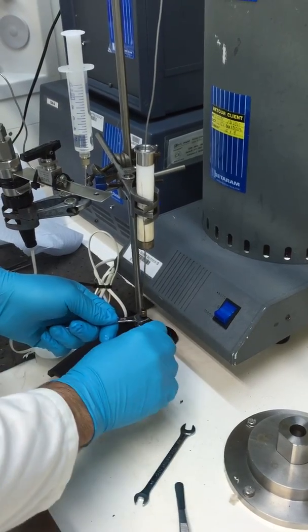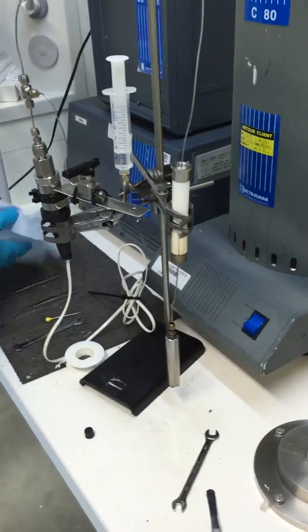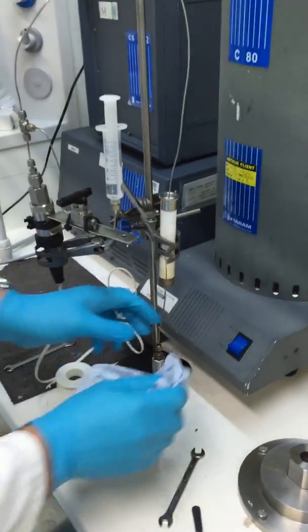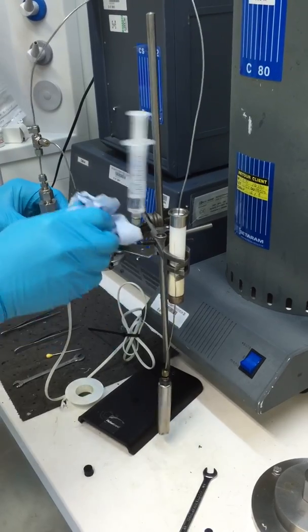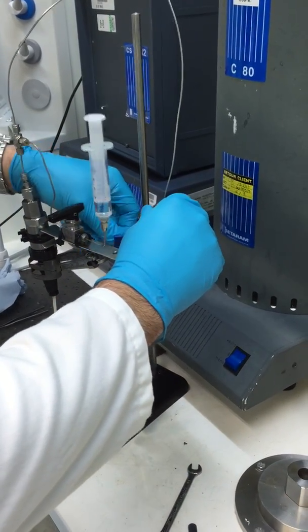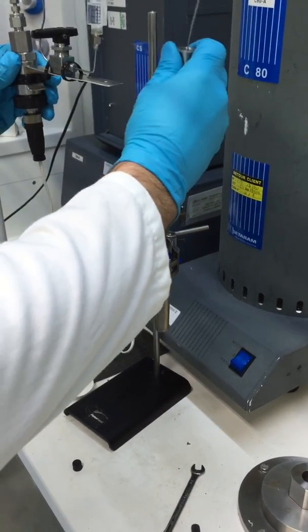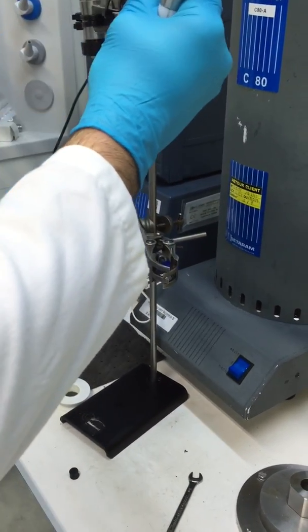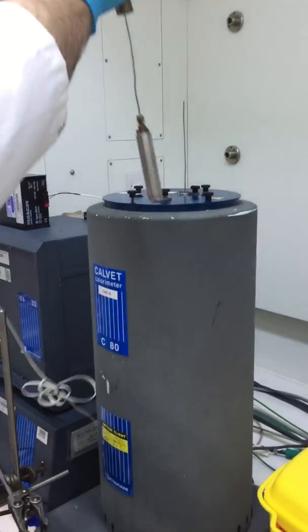Once that is at the required tightness, the pressure transducer and spacer is removed from the jig and then placed in the top of the C80.